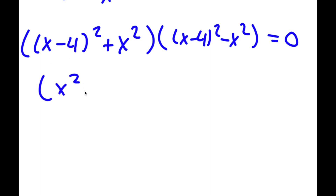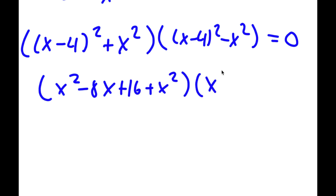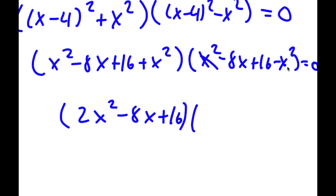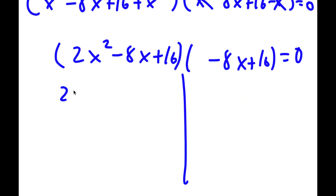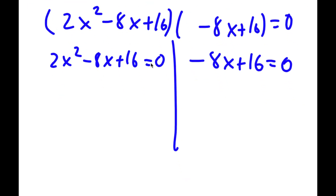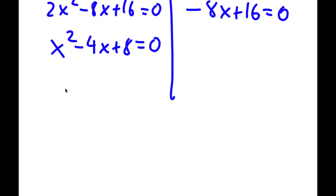On the left factor, x squared and x squared add up, giving 2x squared minus 8x plus 16. On the right factor, the x squared terms cancel, giving negative 8x plus 16. So this gives me two equations: 2x squared minus 8x plus 16 is equal to 0, and negative 8x plus 16 is equal to 0. For 2x squared minus 8x plus 16 equals 0, I divide all terms by 2 to get x squared minus 4x plus 8 is equal to 0, and now I'll plug this into the quadratic formula.